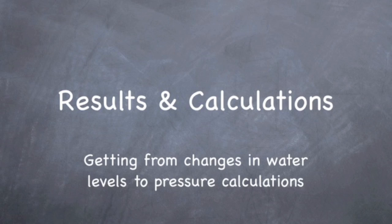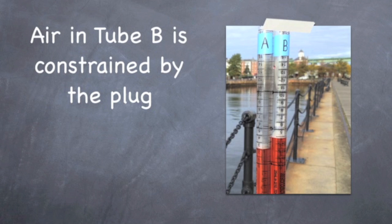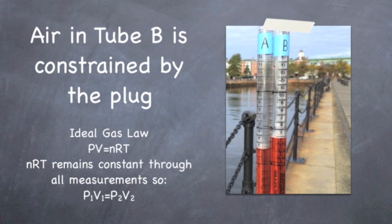Now for some resulting calculations, getting from changes in water levels to pressure calculations. For starters, the air in tube B is constrained by the plug. Because of this, it's an ideal gas and obeys the ideal gas law, which states the pressure times the volume equals nRT. Now nRT remains constant through all measurements.